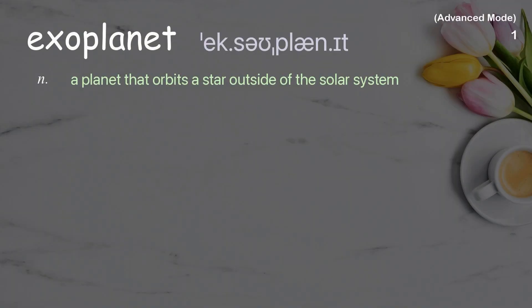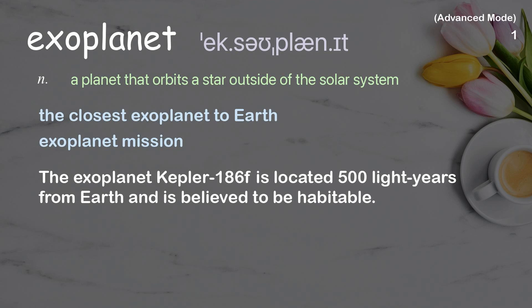Exoplanet: A planet that orbits a star outside of the solar system. Examples: The closest exoplanet to Earth. Exoplanet Mission: The exoplanet Kepler-186f is located 500 light-years from Earth and is believed to be habitable.